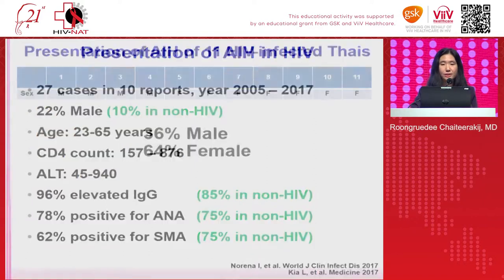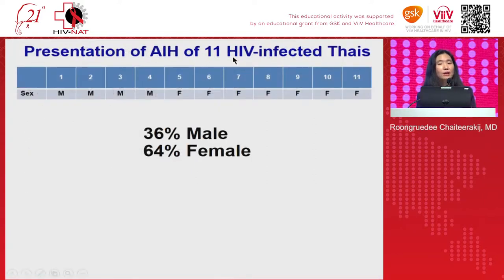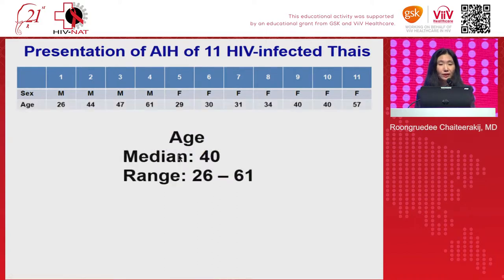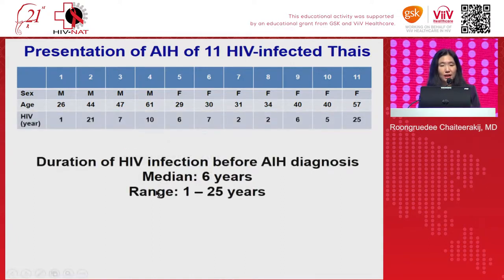Now I'm going to present the AIH presentation in 11 HIV-infected patients from our Thai population cohort. We found that the percent of male was 36%, which is higher than the previous report — very interesting. The median age at presentation of AIH was about 40, ranging from 20s to 60s. The duration of HIV infection before AIH diagnosis had a median of about 6 years, but could range from just 1 year up to 25 years.